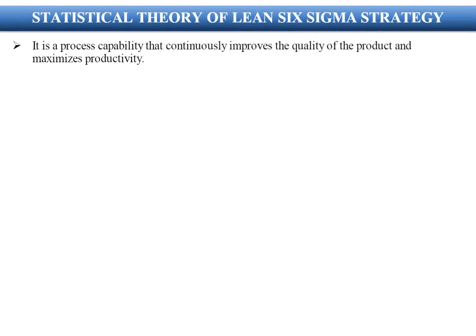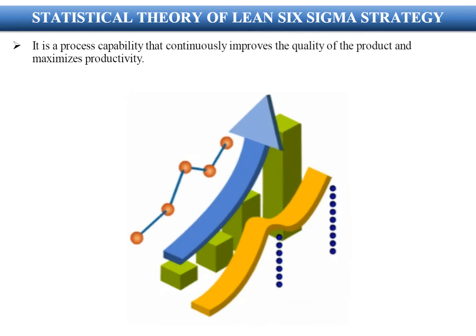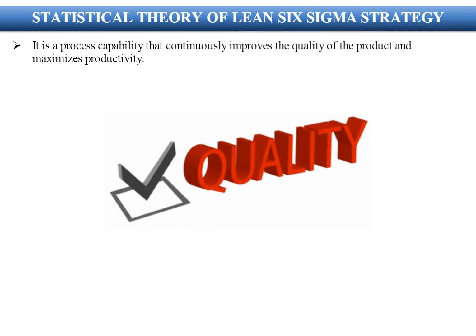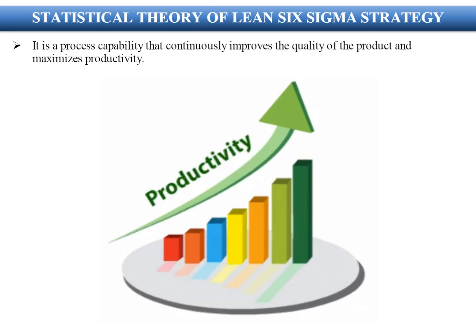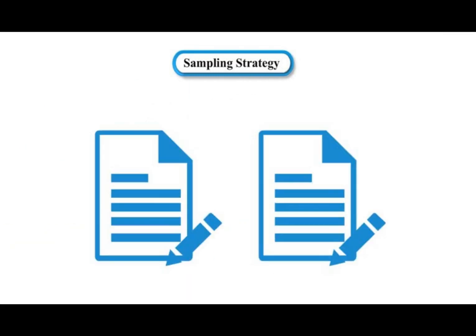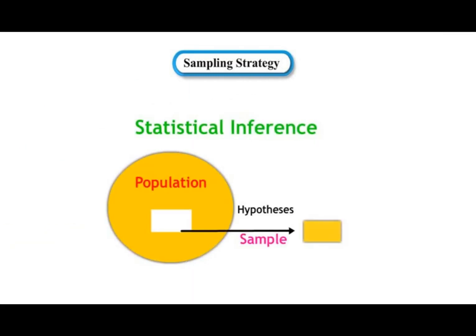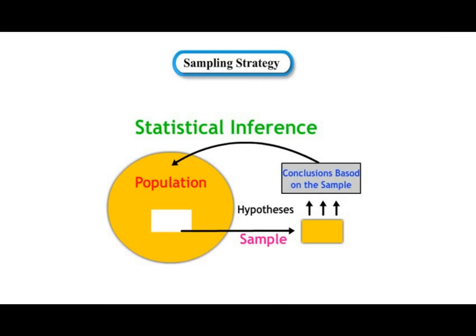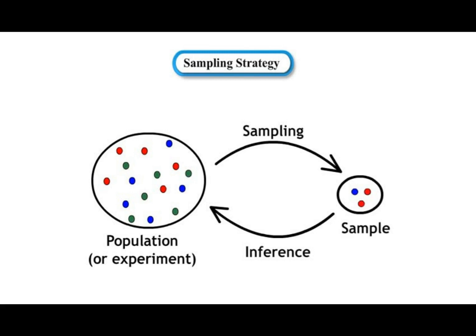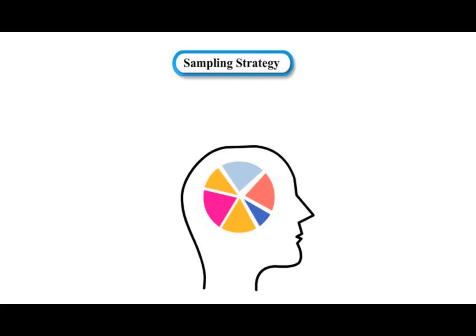Statistical Theory of Lean Six Sigma Strategy: it is a process capability that continuously improves the quality of the product and maximizes productivity. Sampling Strategy: sampling is a more efficient way to collect data. Using a sample to draw conclusions is known as statistical inference, and making inferences is a fundamental aspect of statistical thinking.